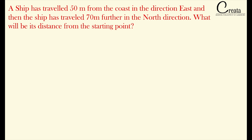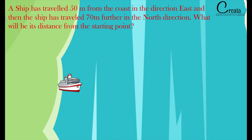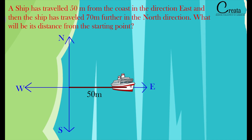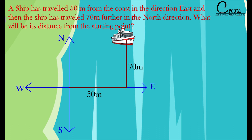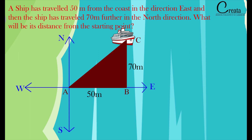We will visualize the question. A ship standing at port travels 50 meters east, then moves north and travels 70 meters. Labeling the three points as A, B, and C — A is the coast. The question asks for the distance from the starting point A to the end point C. If you visualize, you can observe a right angle triangle ABC.